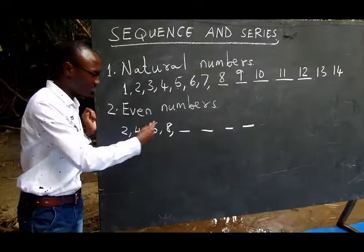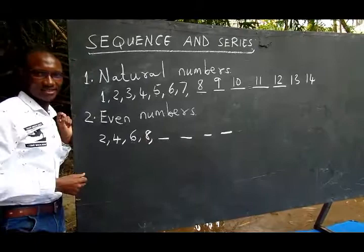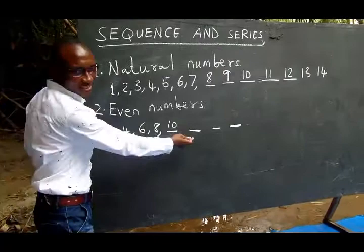From 2 to 4, 2 is adding. 4 to 6, 2 is adding. 6 to 8, 2 is adding. Also here we add 2 to get the next number, the afterword number. Here also we add 2, we get 10. To get the next number we add 2, we get 12. We add 2, we get 14.